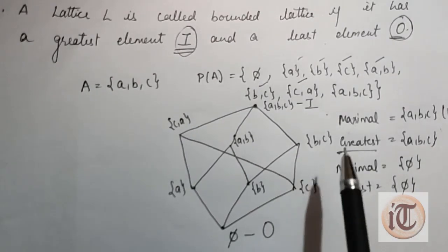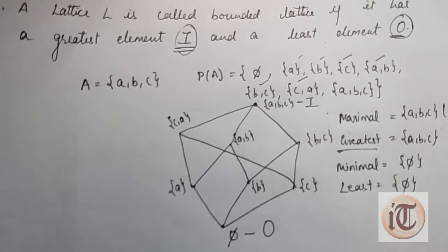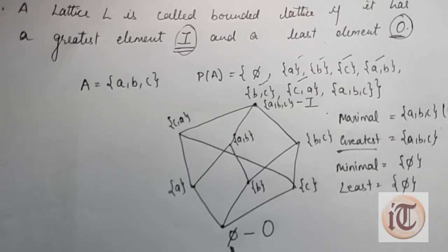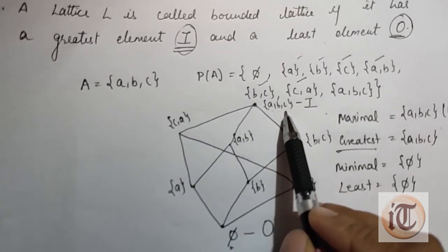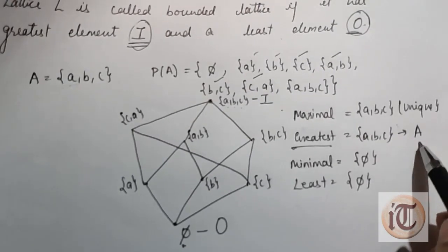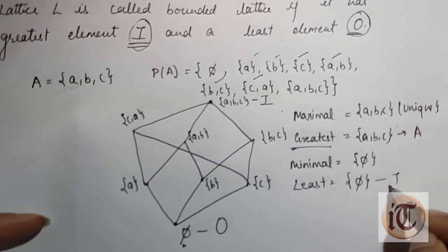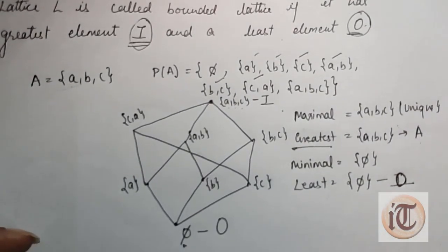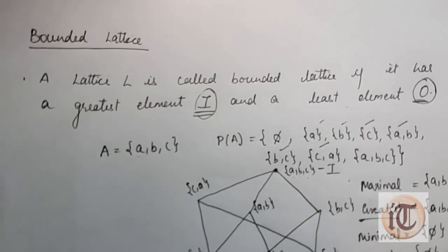So the power set of set A under the operations of intersection and union is a bounded lattice, since phi is the least element and {a,b,c} (set A) is the greatest element. The greatest element is represented as i and the least element is represented as o. I hope you understand what a bounded lattice is. Keep watching my next video on distributive lattice. Thank you so much.